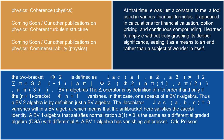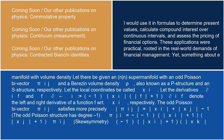BVn algebras: the delta operator is by definition of nth order if and only if the (n+1)-bracket phi_{n+1} vanishes. In that case one speaks of a BVn algebra. Thus a BV2 algebra is by definition just a BV algebra. The Jacobiator Jac(a,b,c) equals 0 vanishes within a BV algebra, which means the antibracket satisfies the Jacobi identity. A BV1 algebra that satisfies normalization delta(1) equals 0 is the same as a differential graded algebra (DGA) with differential delta. A BV1 algebra has vanishing antibracket.